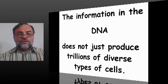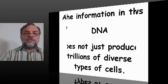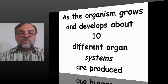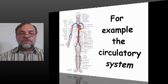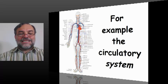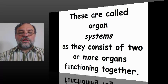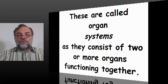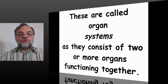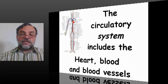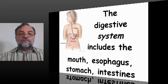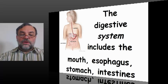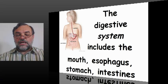The information in the DNA does not just produce trillions of diverse types of cells. As a human grows and develops, about 10 different organ systems are produced. These are called organ systems because they consist of two or more organs functioning together. The circulatory system, for example, includes the heart, the blood, and blood vessels. The digestive system includes the mouth, the esophagus, the stomach, and the intestines.